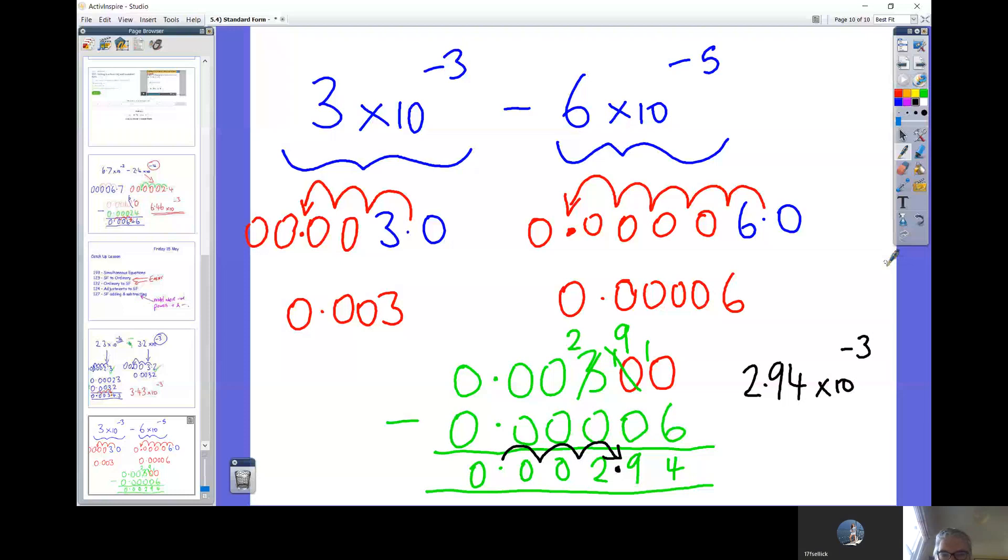3 times 10 to the minus 3 minus 6 times 10 to the minus 5. You start off by converting both of these to small numbers because obviously they're small because we've got the minus powers. So I've set up the zeros to the left-hand side of both and then I've hopped across the appropriate number of places. So I know you know how to do that.